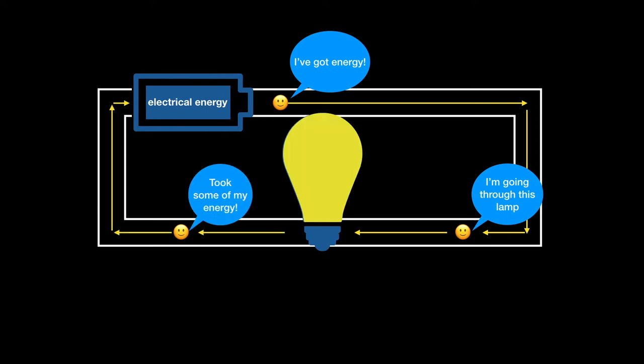Therefore, there will be a drop in voltage because it's lost energy across the lamp. And the more resistance, the more the voltage drops.